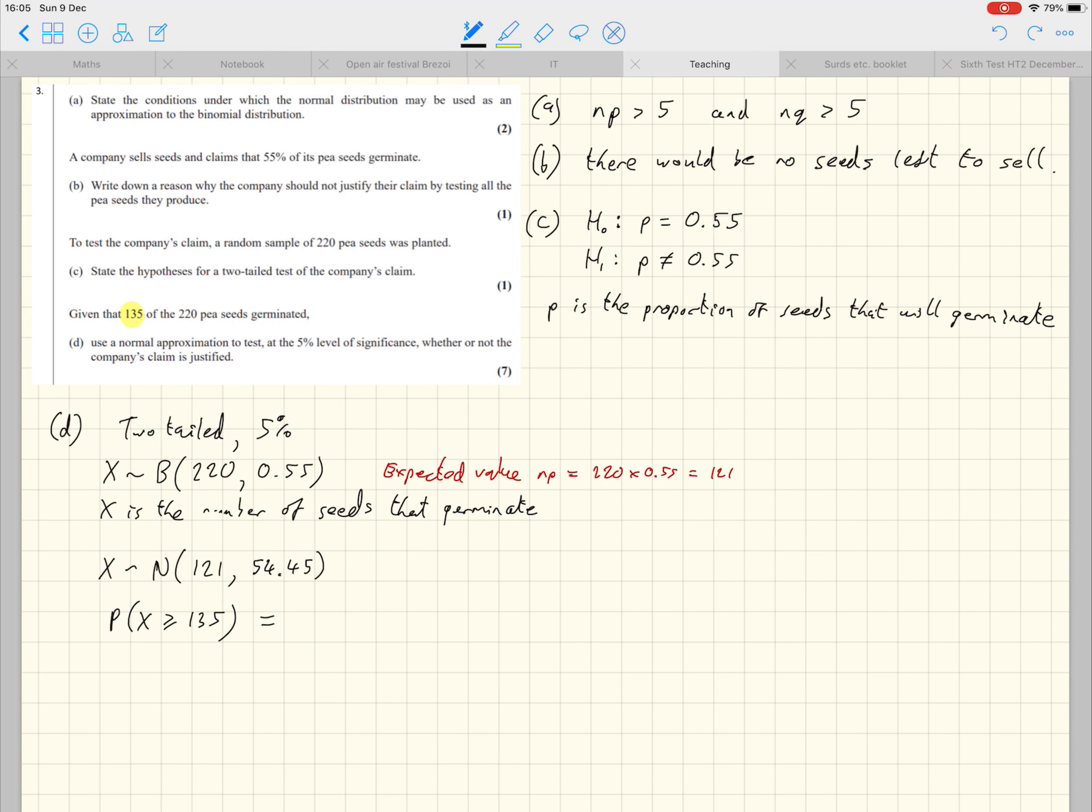And if you type that in, the calculator tells you that you get 0.028896. And once again, that's greater than the 2.5% that would be the critical value. And so it's not significant. Again, we do not reject H0 and the company's claim is justified.